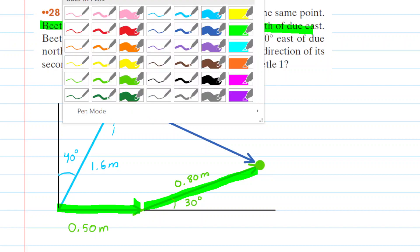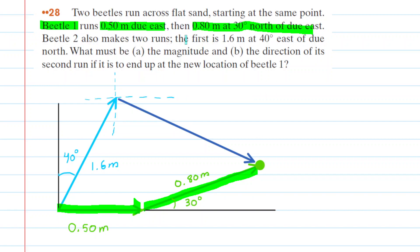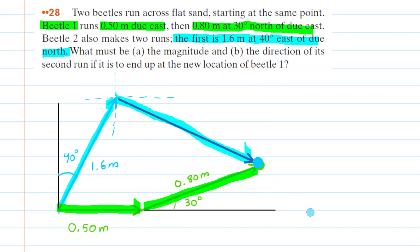We look at the other beetle, colored in blue. The first motion is 1.6 meters at 40 degrees east of due north, shown by this vector right here. Then there's another motion of the second beetle — we don't know this vector; we're actually trying to figure that out. What we do know is that beetle ends up in the same position as the first beetle, so we can put a little blue dot there to represent that they've arrived at the same spot.